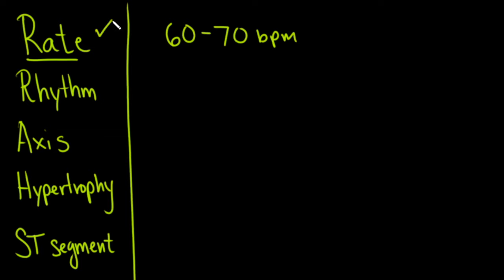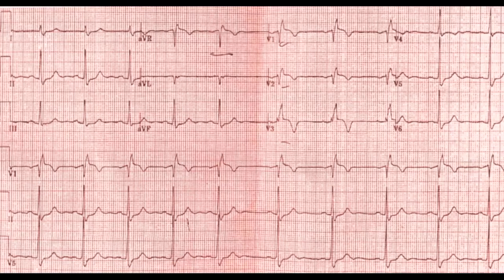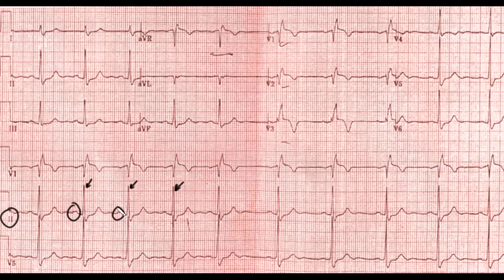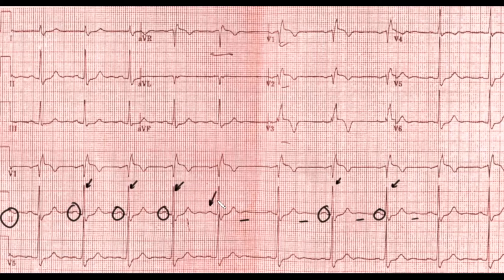Next, let's look at rhythm. The best lead for rhythm is lead II, which is the rhythm strip. We look for P waves before each QRS complex, and we can clearly see P waves before each one. There's a small extra deflection that is probably a U wave, sometimes associated with low potassium. We call this sinus rhythm.